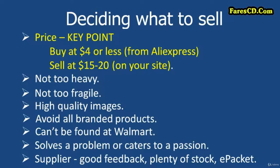Here we go — this was the slide: Deciding what to sell. These are what I call my golden rules throughout this course. So there was the price point and what we're going to sell it at. Is it not too heavy? Is it not too fragile? Are there good quality images? Are you avoiding branded products? Can it be found at Walmart? Does it solve a problem or cater to a passion? And has the supplier ticked the various boxes we need? All these are simple rules, but when you dive into Oberlo it's so easy to just click on products and forget all this. So please, write these down or print this slide out and keep it next to you so that every time you look at a product you think: do they fit these golden rules? It's going to help you massively.